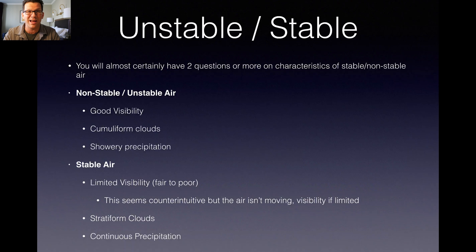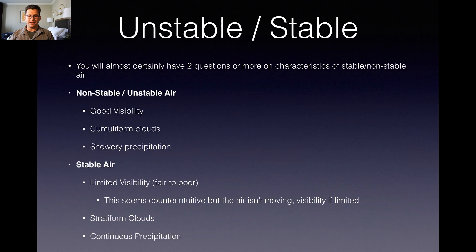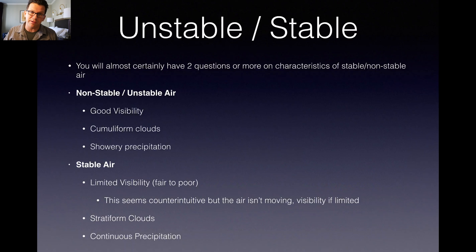So looking at this slide — I'll print these out to a PDF, there'll be a link in the description to download them — you will have two or more questions on the characteristics of air. Non-stable or unstable air: good visibility, cumuliform clouds (cumulus clouds), and showery precipitation. Those cumulus clouds are the ones that turn into thunderstorms. Stable air: limited visibility — counterintuitive, but the air isn't moving so visibility is limited — stratiform clouds, which are your nice even cloud layers, and continuous precipitation when there is precipitation.